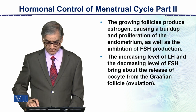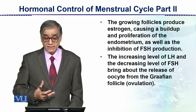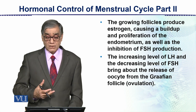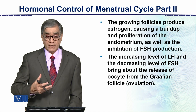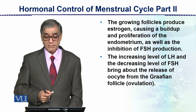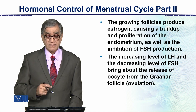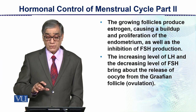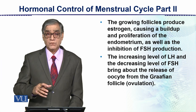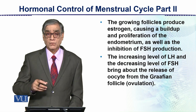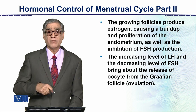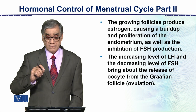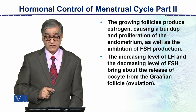The growing follicles produce estrogen. The estrogen causes a build-up and proliferation of the endometrium, as well as the inhibition of FSH production. So as estrogen rises in the blood, its feedback will be negative — it will inhibit FSH production.